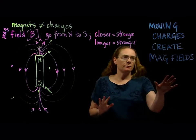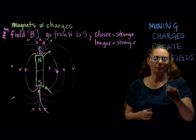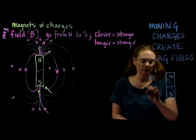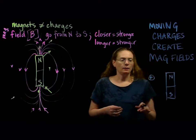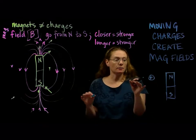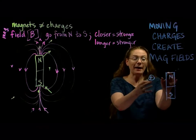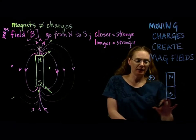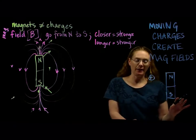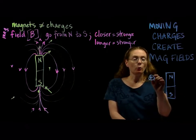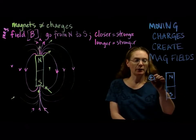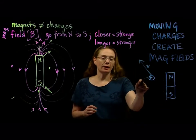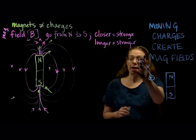Moving charges create magnetic fields. So if I have a bar magnet — north and south — and I put a positive charge here, if it's just sitting there, this positive feels nothing, because it's not a magnet, and the magnet is not positives or negatives. So just having a static charge here wouldn't have any effect. However, if this thing were moving — if we give it some velocity — then this moving charge creates a magnetic field, and then we'd have an interaction.